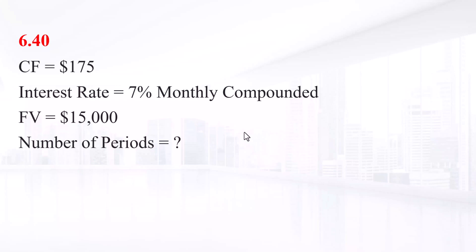You are prepared to make monthly payments of $175 beginning at the end of this month into an account that pays 7% interest compounded monthly. How many payments will you have made when your account balance reaches $15,000?